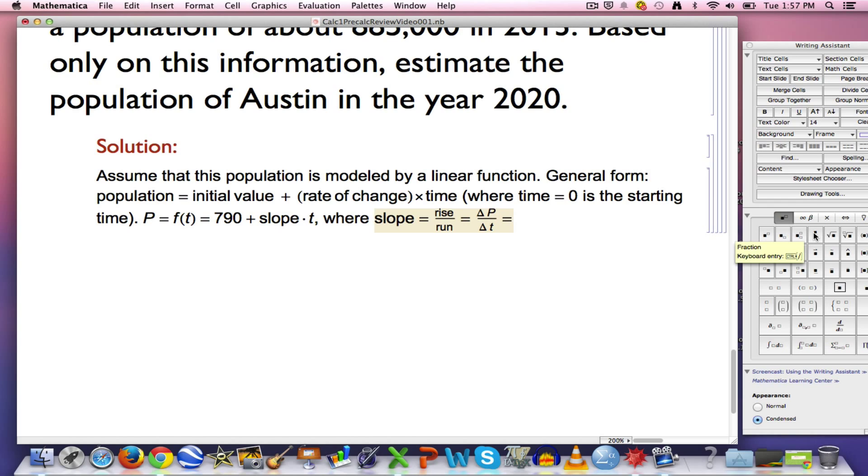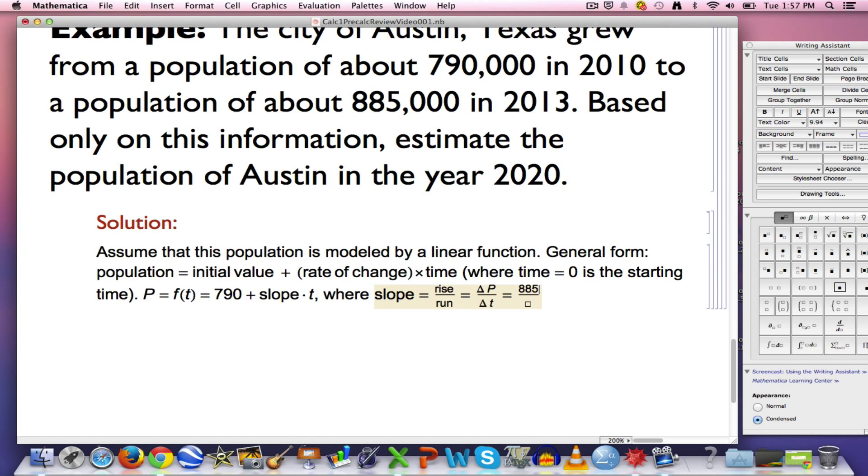The change in P, that's the change in population, it's a difference, 885,000, and I'll just write that as 885, since I'm in thousands, minus 790,000, divided by the time it elapsed, 2013 minus 2010, this is going to be 95 divided by 3.